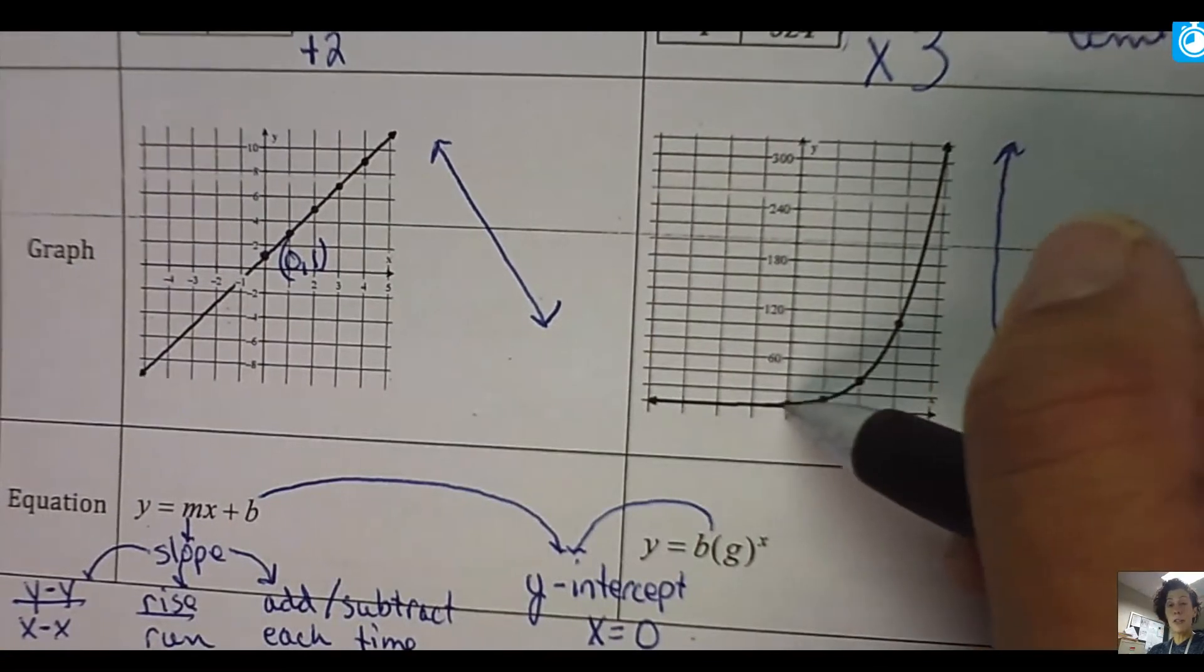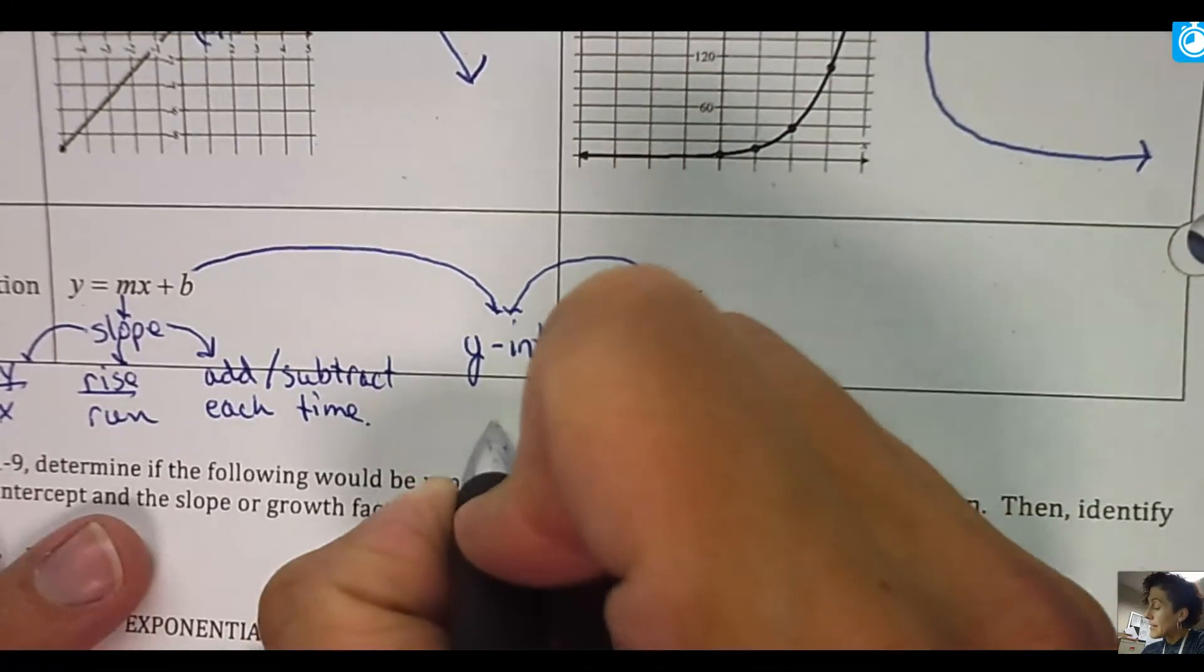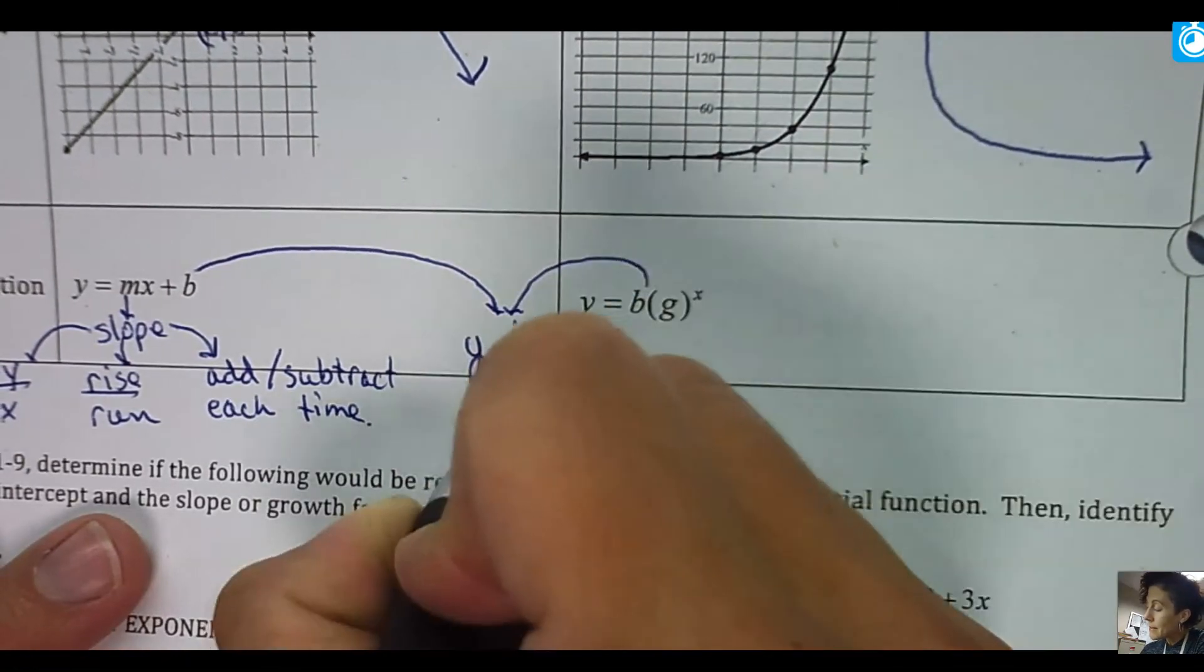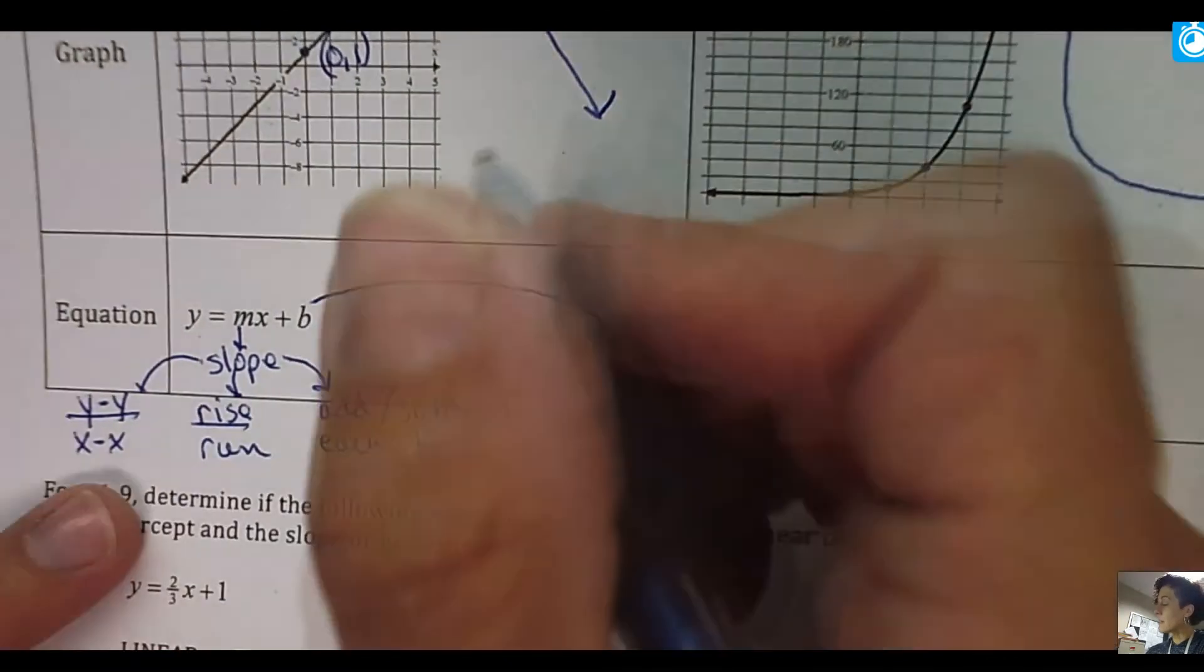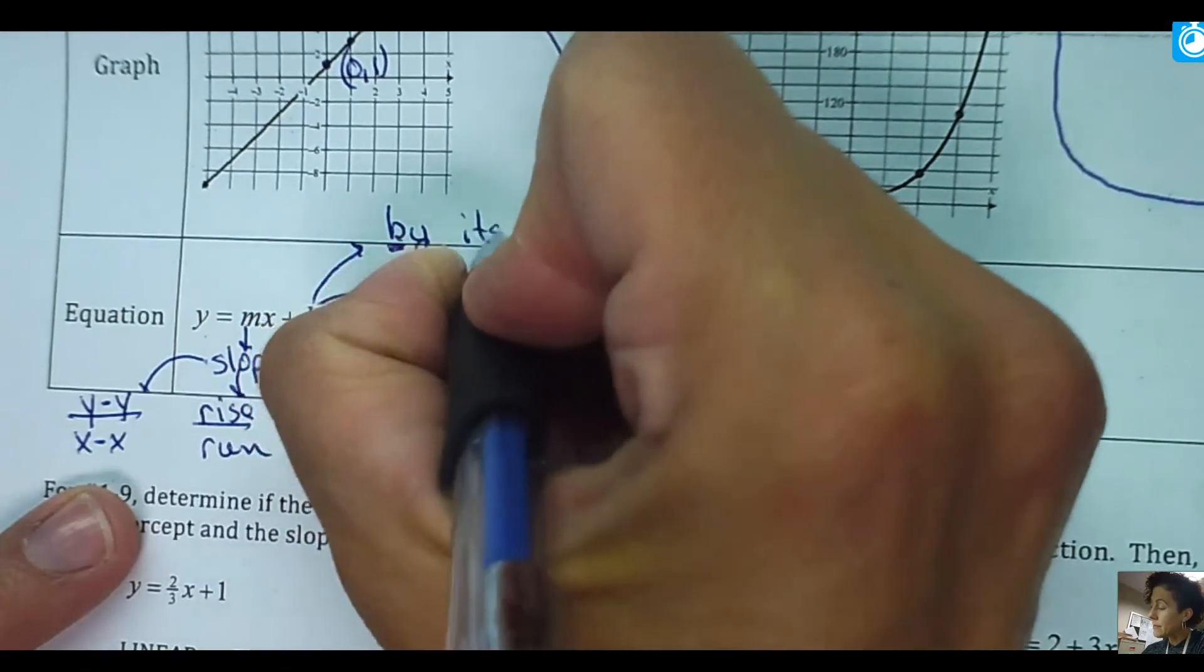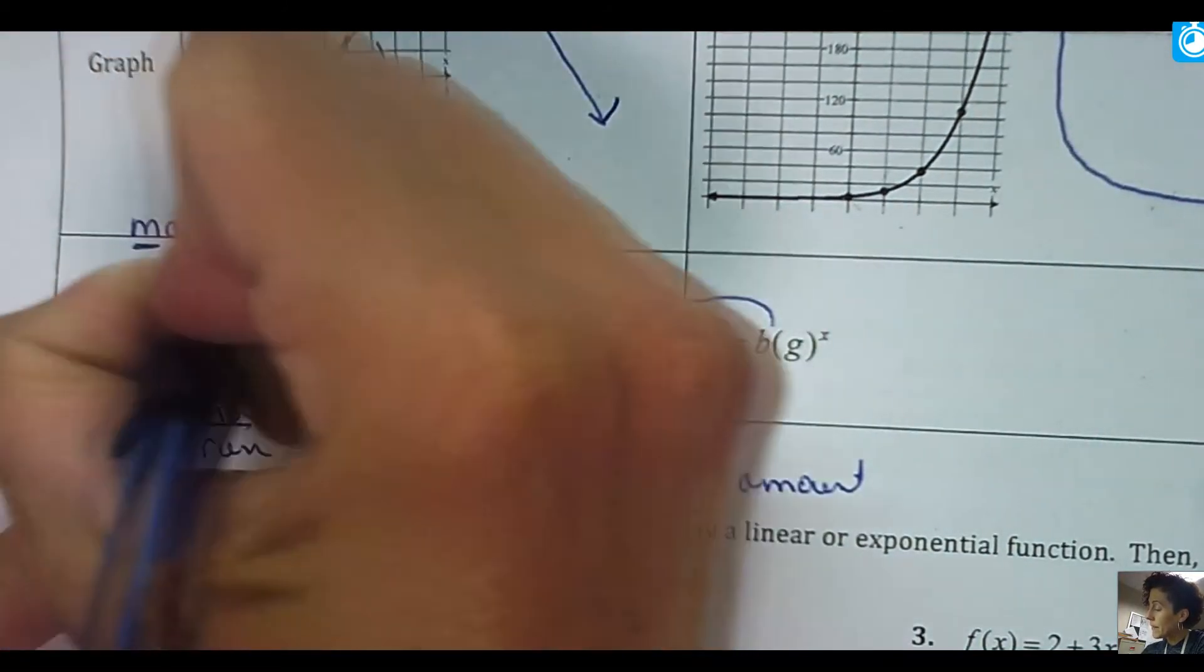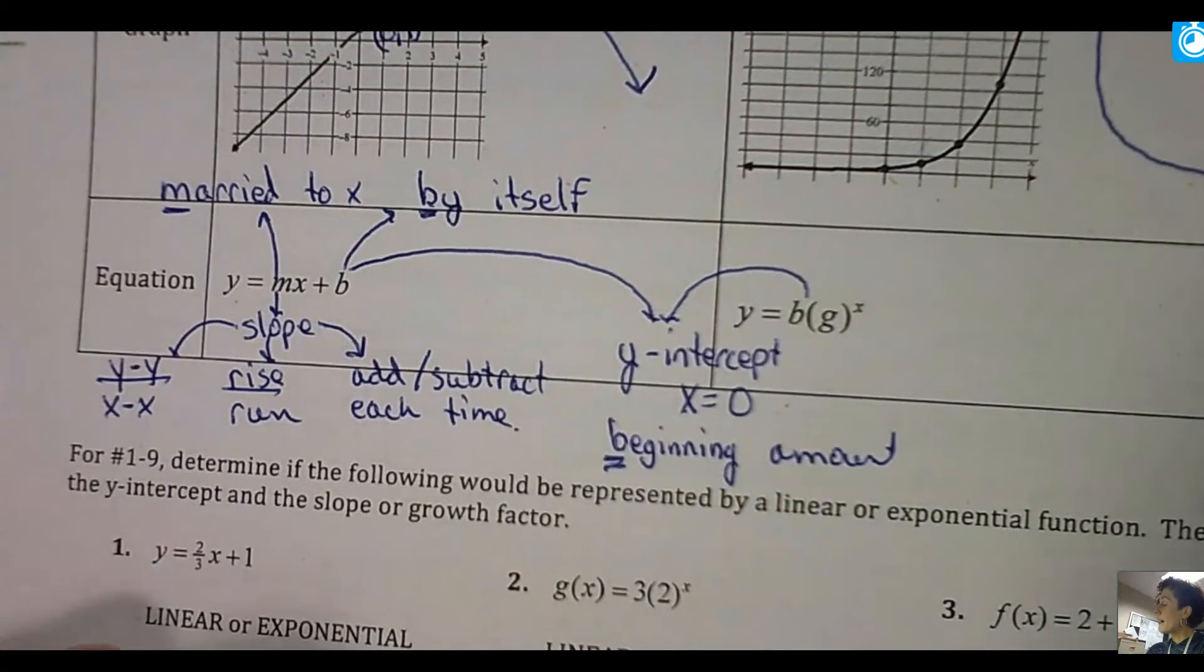So for this chapter, the Y intercept when X is 0 is going to be our beginning amount. And it's easy to remember that because B and beginning amount. If you need some other tricks to remember, especially like in slope, B is also the number that's by itself. So B for by itself. And M is married. So M for married to X. A little trick to remember what's what. So again, you can pause, get caught up. I'll continue.